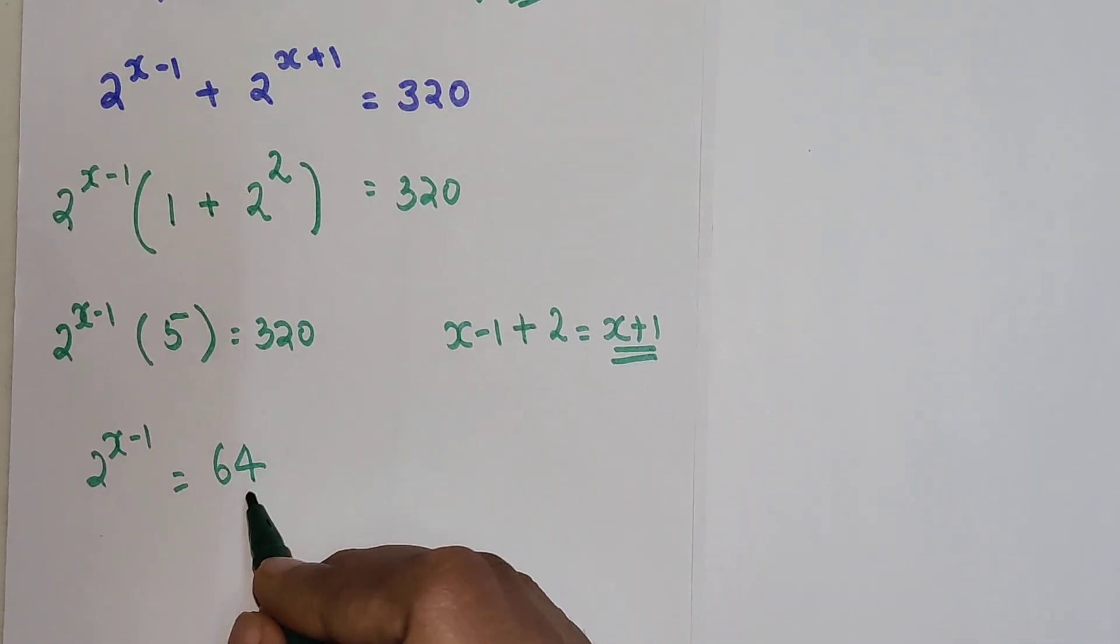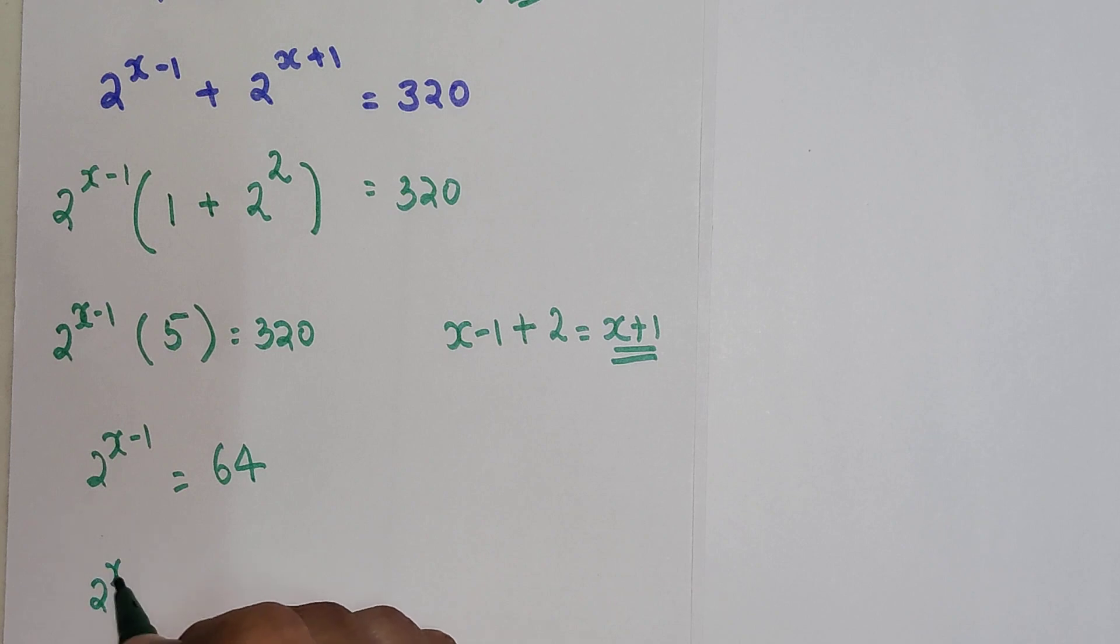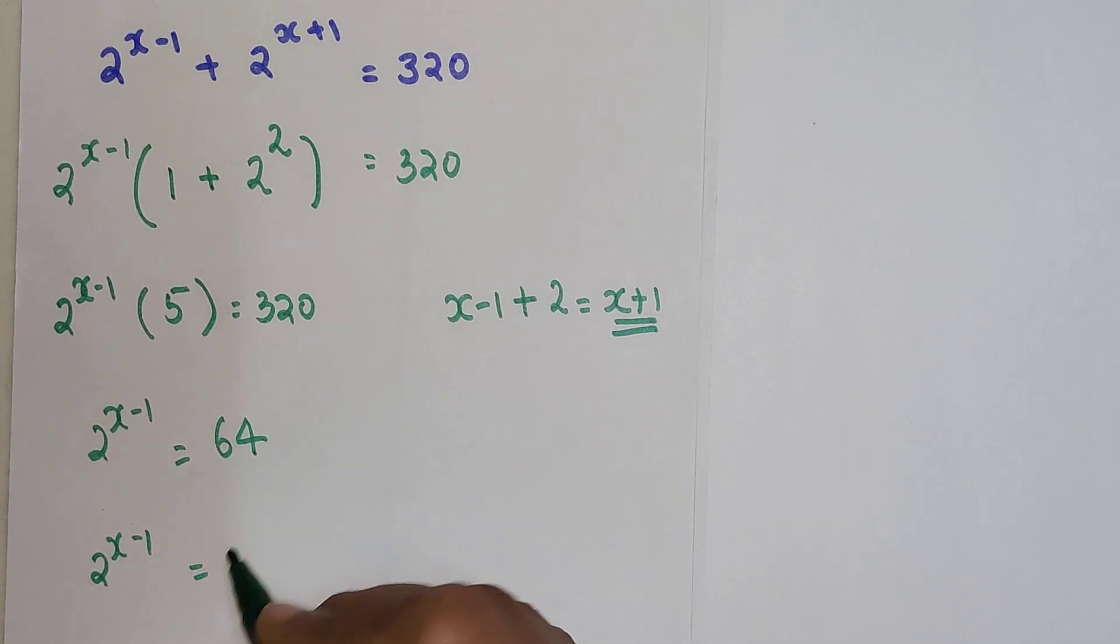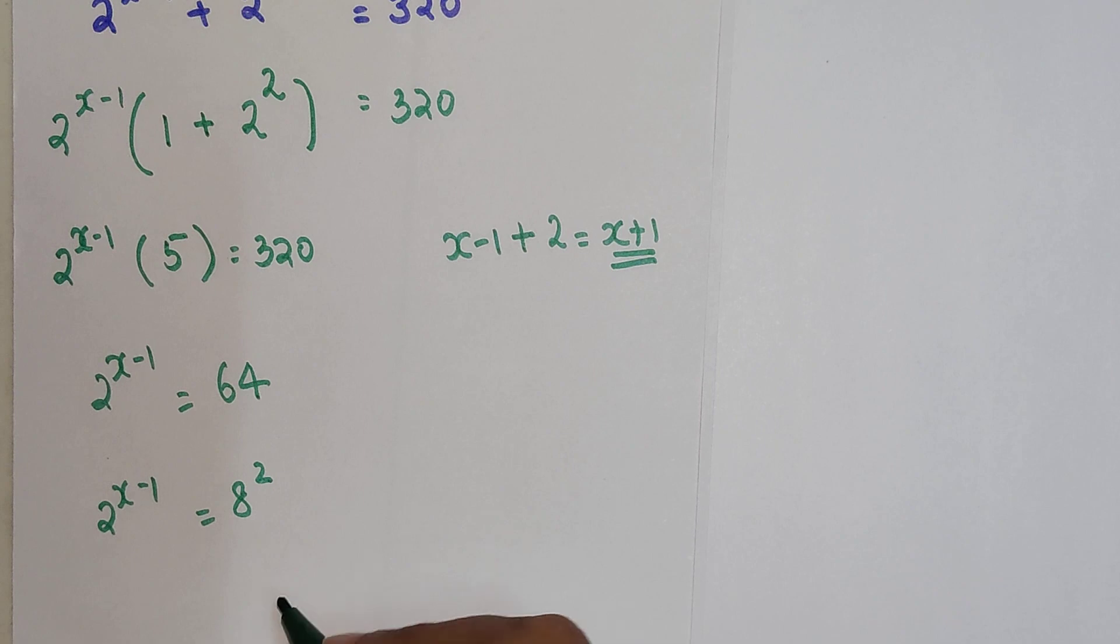So now I know that 2 raised to x minus 1, and 64 can be written as what in terms of 2, or you can also write this as nothing but 8 square, correct?